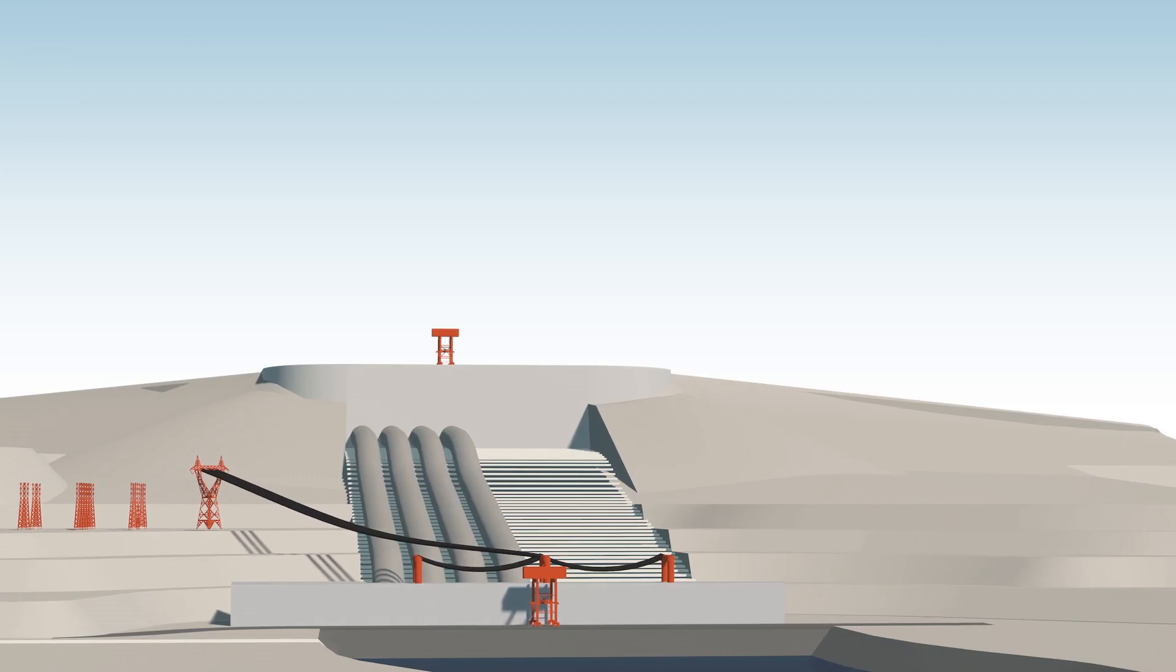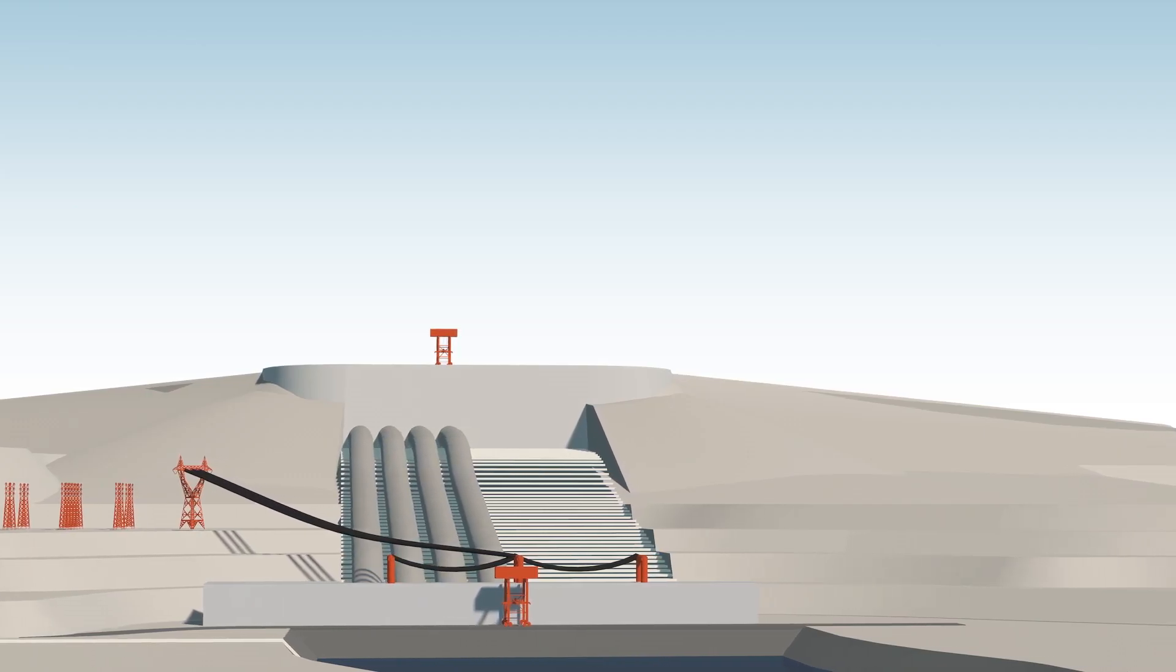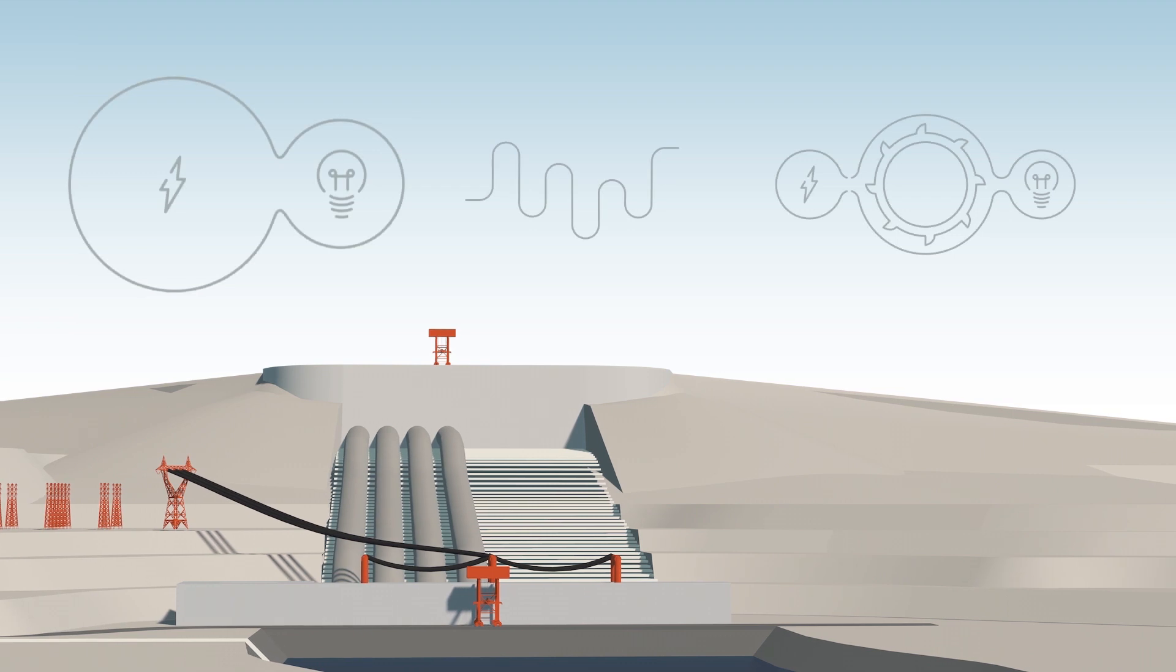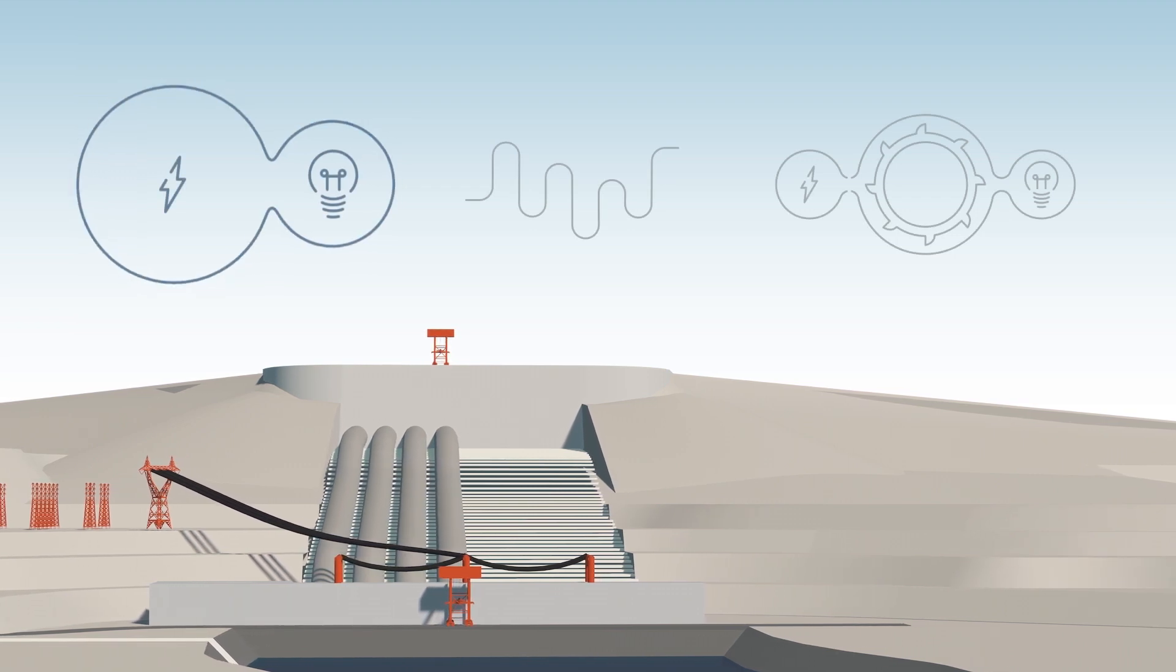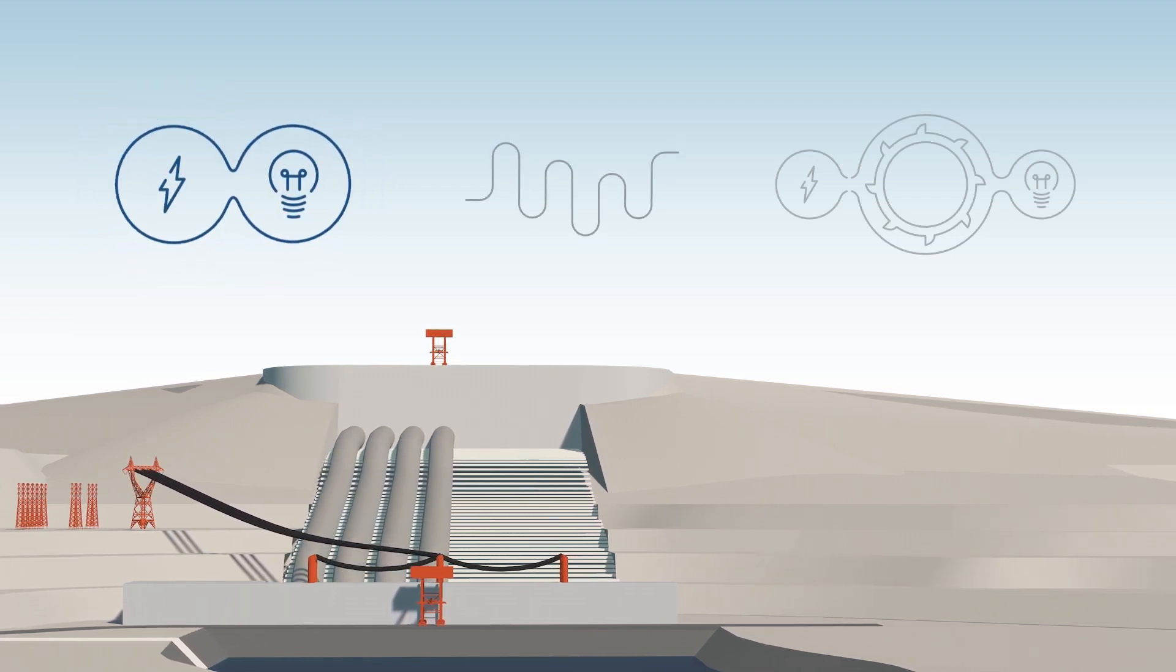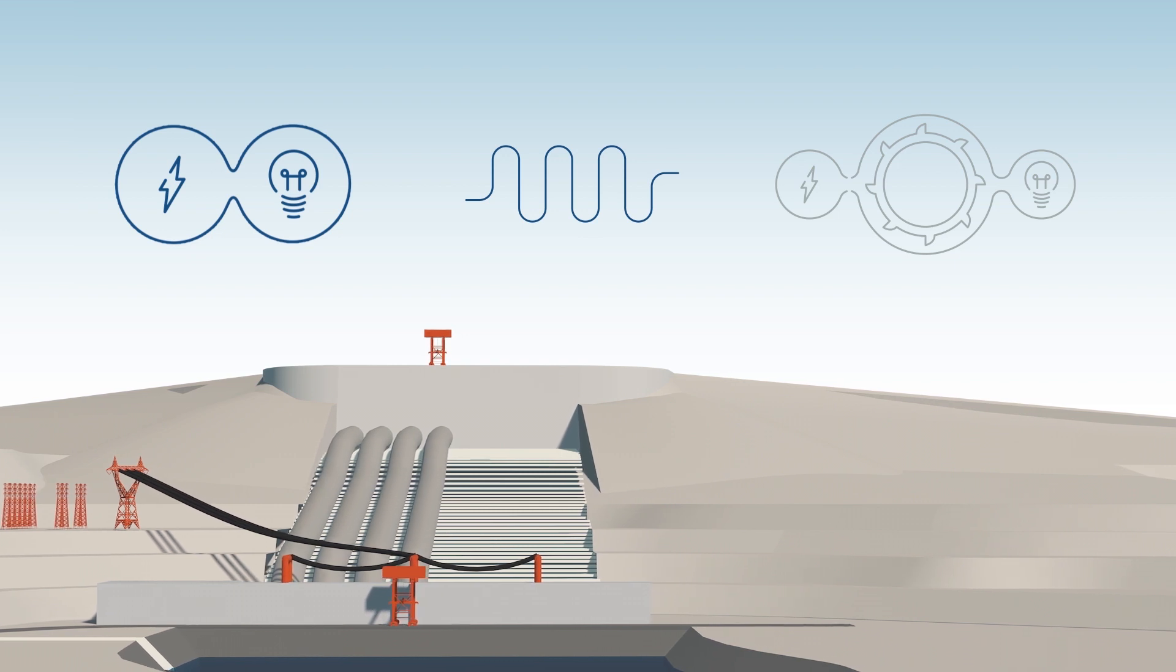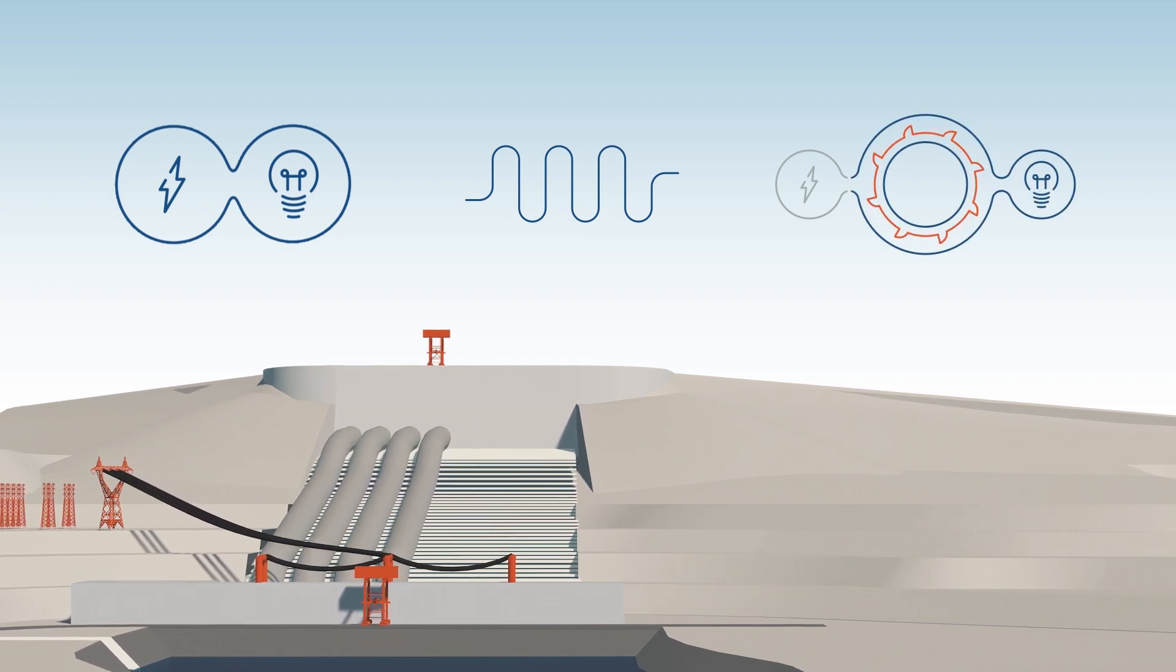The plant's units ensure fast reserve capacity. Other functions of the plant that are no less important are the leveling out of fluctuations on the power grid, the regulation of voltage and frequency, and the restoration of power supply after system breakdowns.